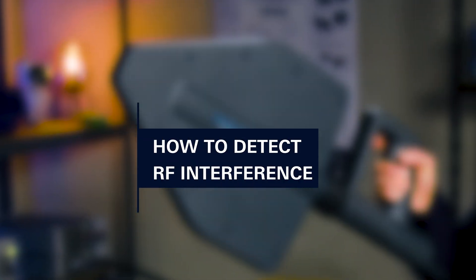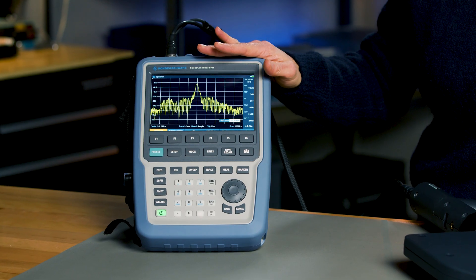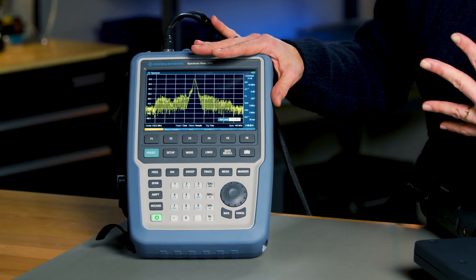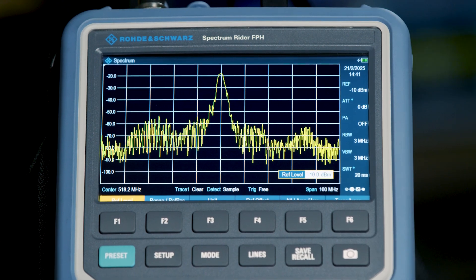Let's see how the FPH Handheld Spectrum Analyzer from Rohde & Schwarz can help with this problem. The FPH Spectrum Analyzer is designed to detect and analyze such interference. On the FPH display, it shows two signals overlapping each other.